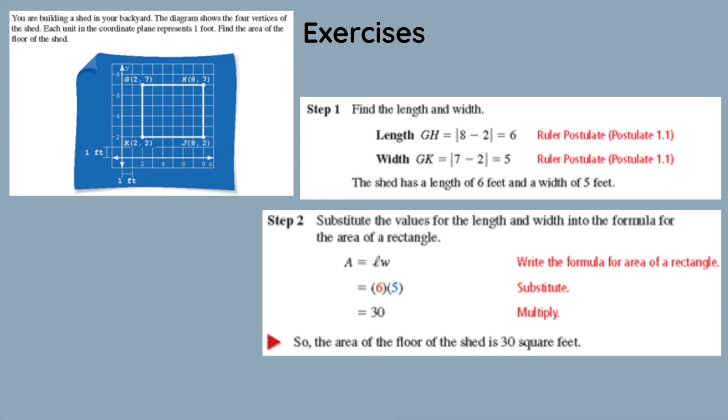Finally, let's try one more problem together, and this one is a real-life scenario. You are building a shed in your backyard. The diagram shows the four vertices of the shed. Each unit in the coordinate plane represents one foot. Find the area of the floor of the shed. First, what we're going to want to do is find the length and width. 1, 2, 3, 4, 5, 6. We have a length of 6 feet and a width of 1, 2, 3, 4, 5. Once we multiply 6 and 5, we get a total of 30. So, the area of the floor of the shed is 30 square feet. When finding the perimeter, we can just use 6 plus 5 plus 6 plus 5, which totals to 24 feet.